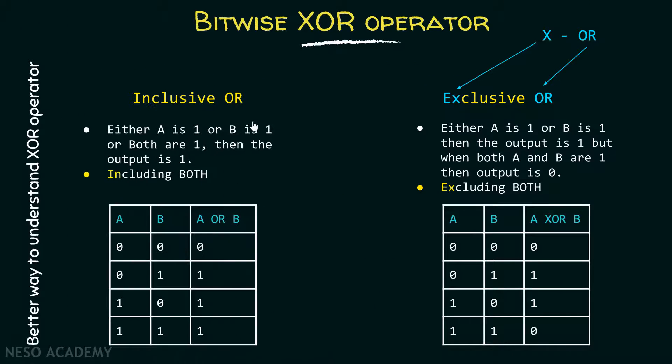Now let's try to understand the concept of exclusive OR operator. Here in this case, when either A is one or B is one, then the output is one. There is no problem. But when both A and B are one, then the output is zero. Please note down this point. That is why it is called exclusive OR operator, because it is excluding the both combination. That is, when both bits are one, then the output is zero and not one.